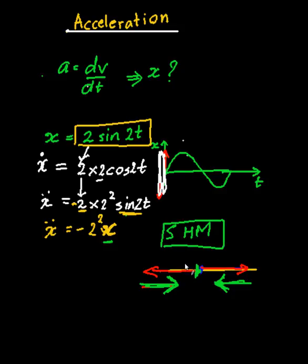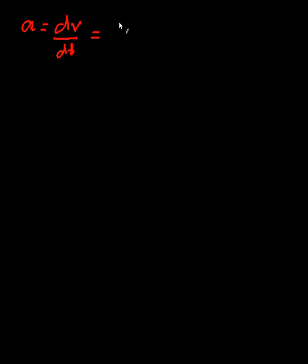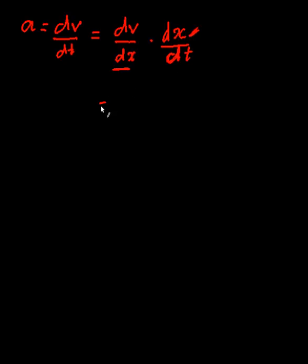That's a special case, but there's nothing stopping us from stating acceleration as a function of x in general. For this kind of question you should be able to solve it. Let me start from the definition: acceleration is the change in velocity over change in time. By the chain rule, this can be written as (dv/dx) times (dx/dt). Now dx/dt is velocity, so acceleration equals v times dv/dx.